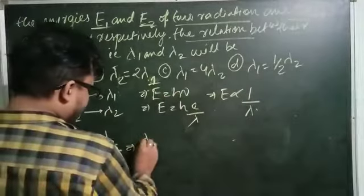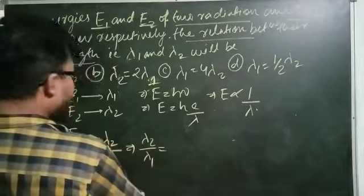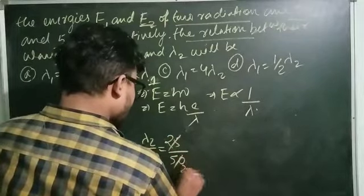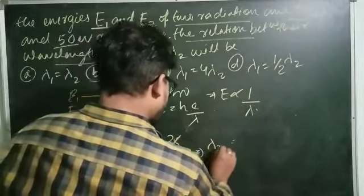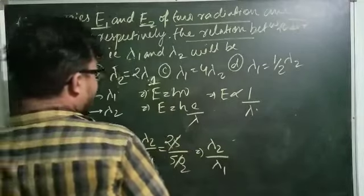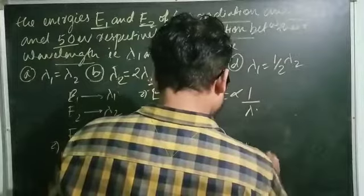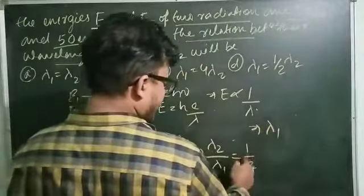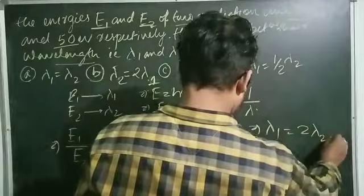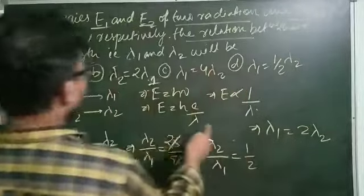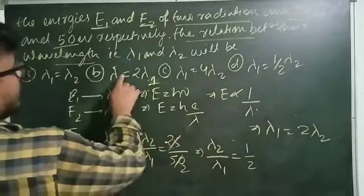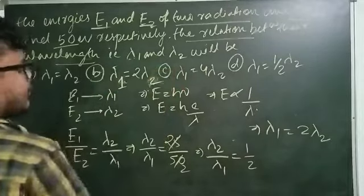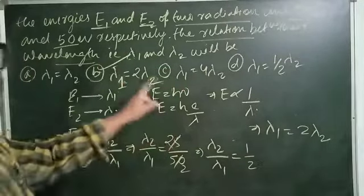So lambda 2 by lambda 1 equals E1 by E2. E1 is equal to 25 and E2 is equal to 50. So lambda 1 will be equal to 2 lambda 2.